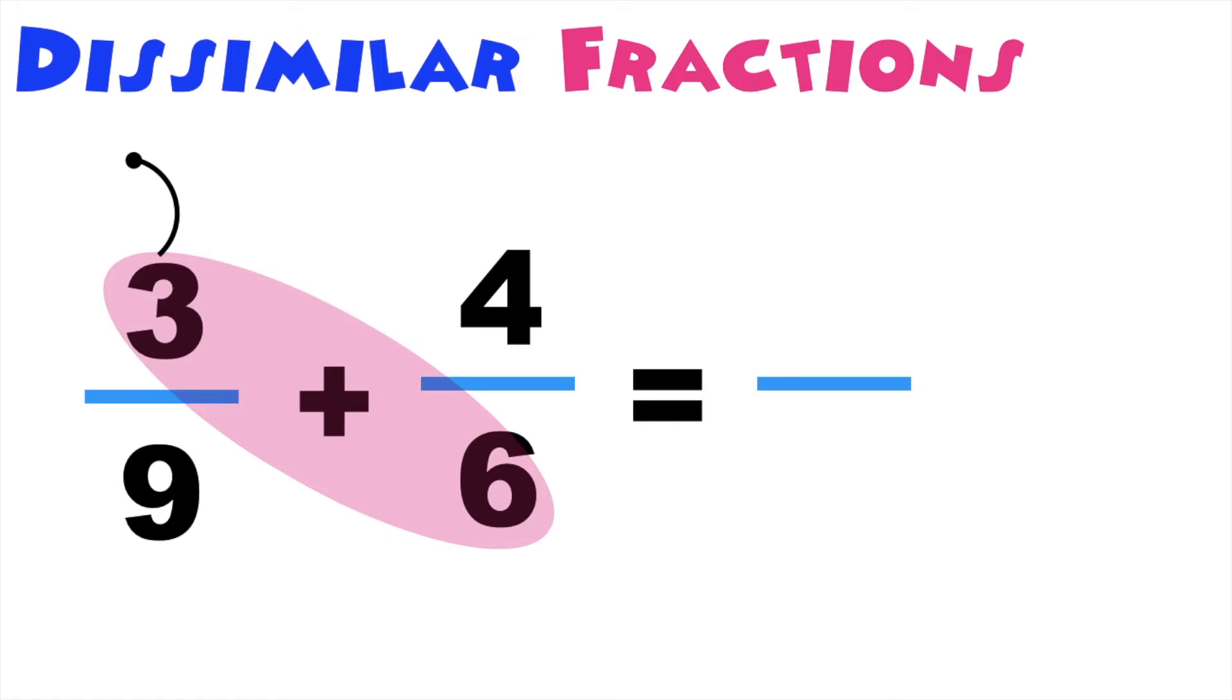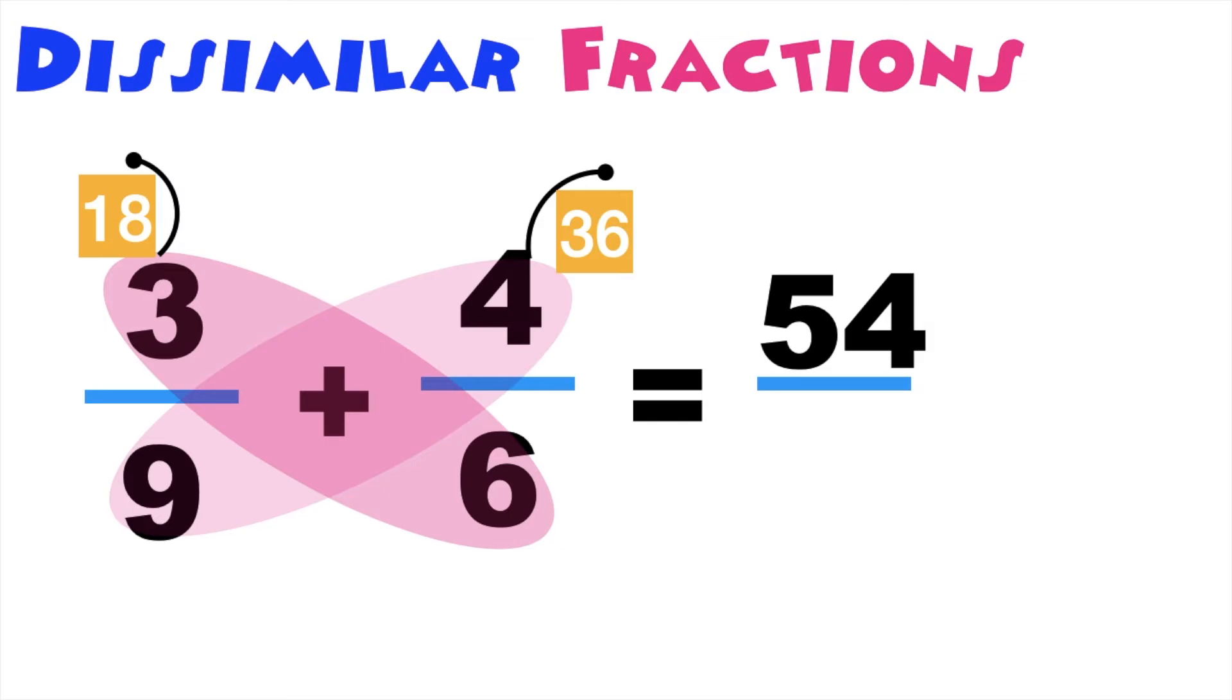6 times 3 is equal to 18. Then 9 times 4 is equal to 36. Let's add 18 and 36. We have 54. Then let's multiply the denominators. 9 times 6 is equal to 54. So let's change it in lowest terms. 54 over 54 is equal to 1.